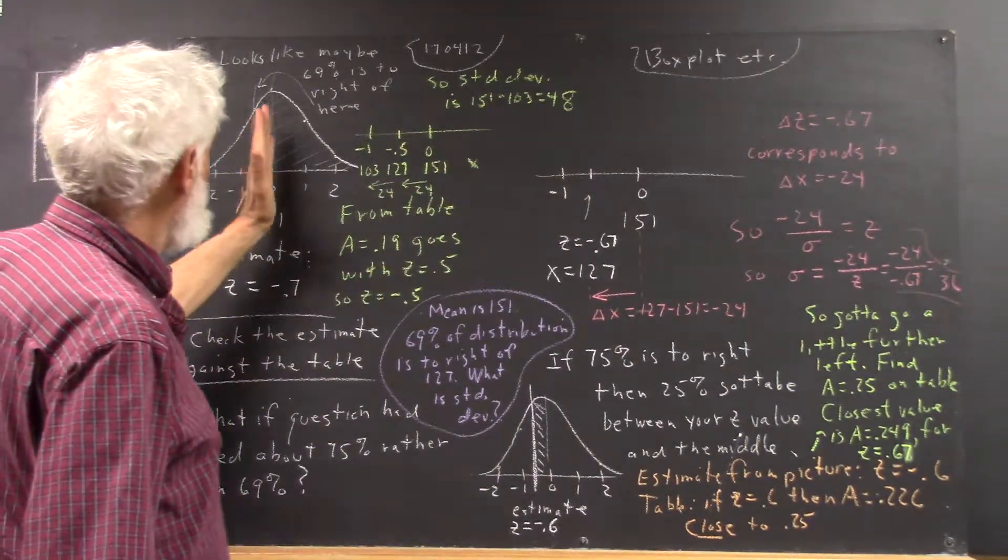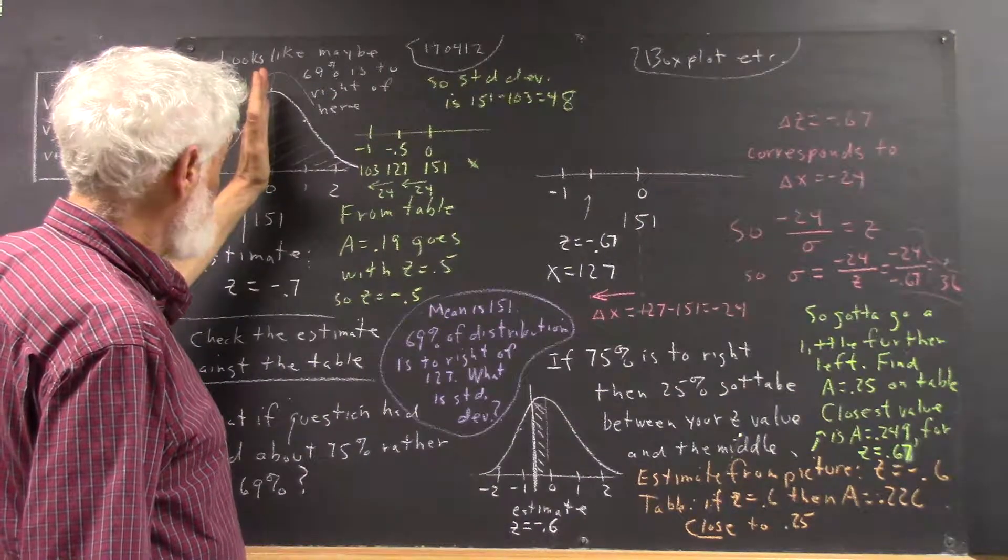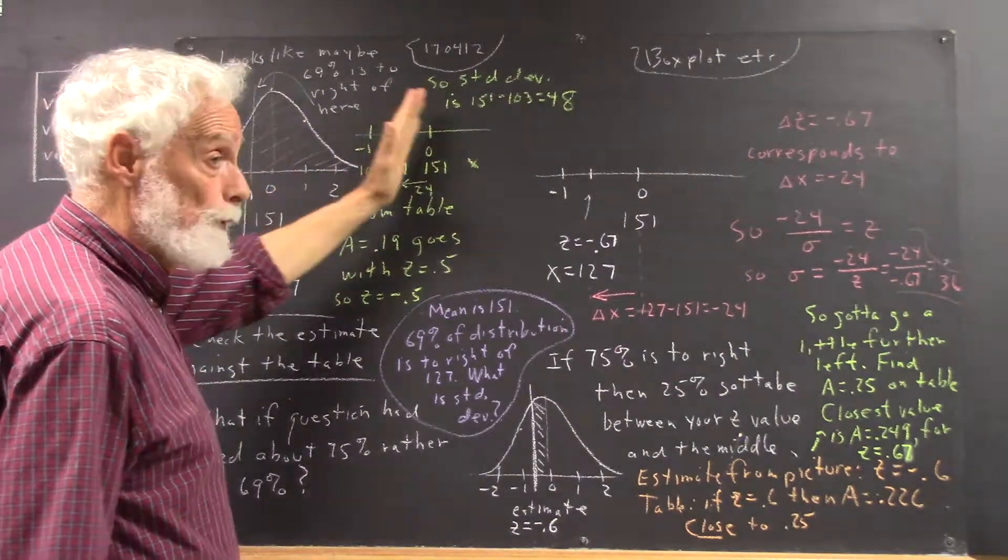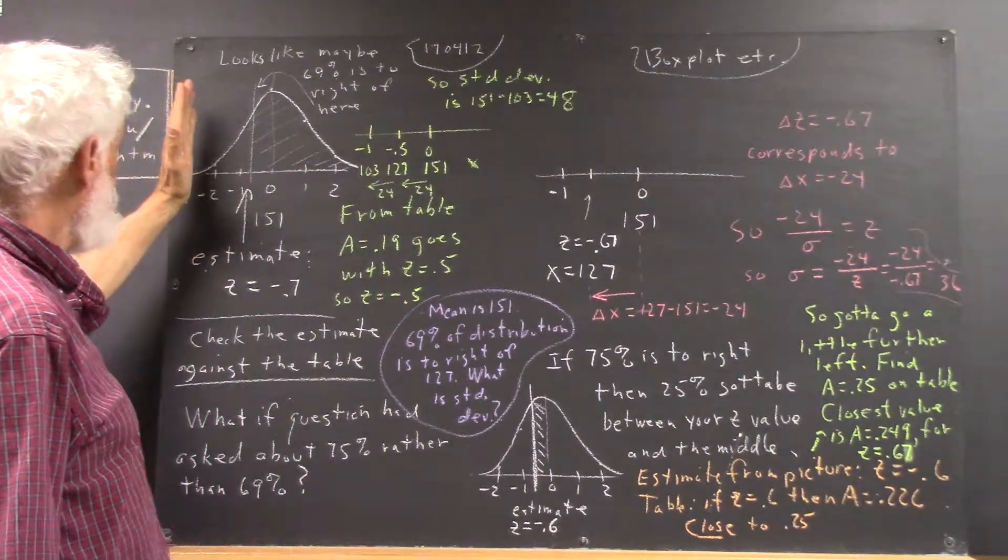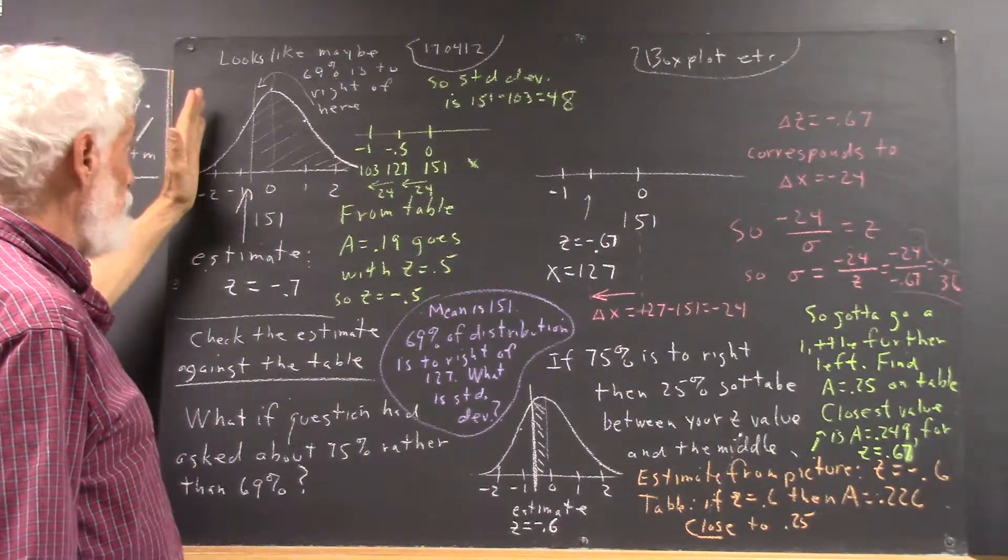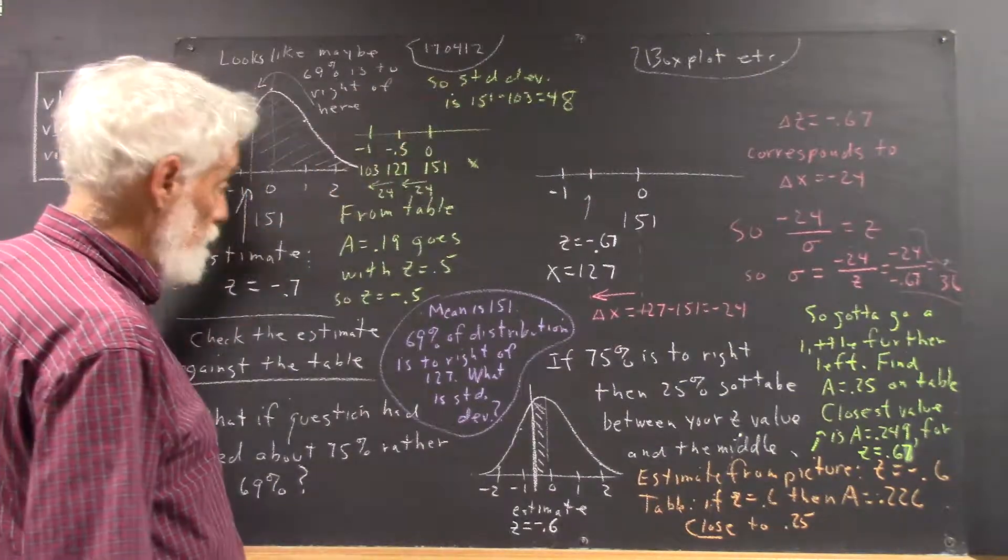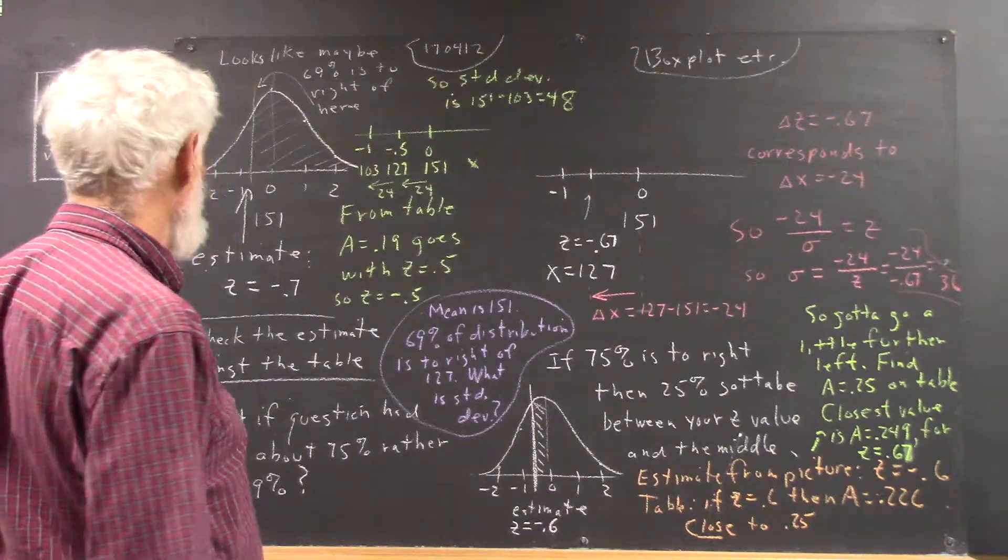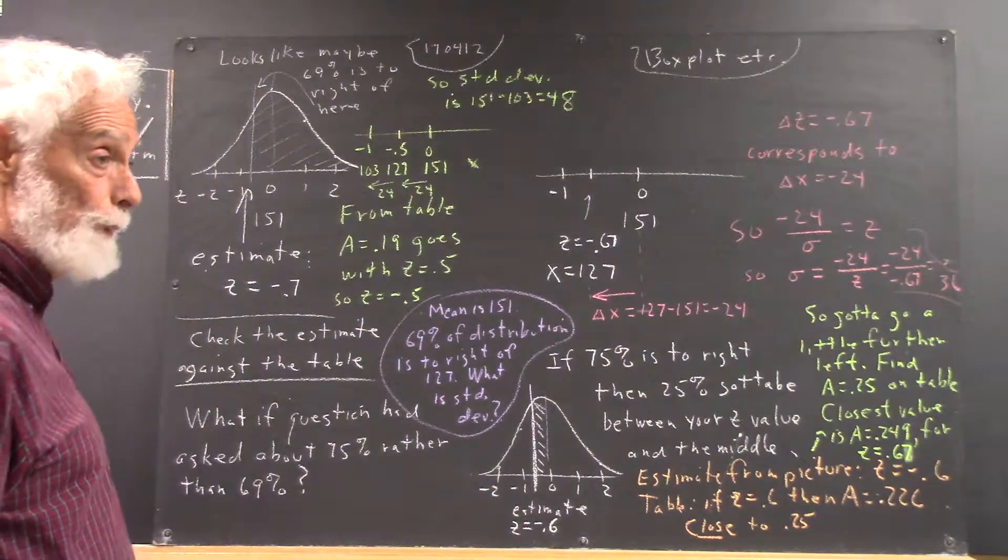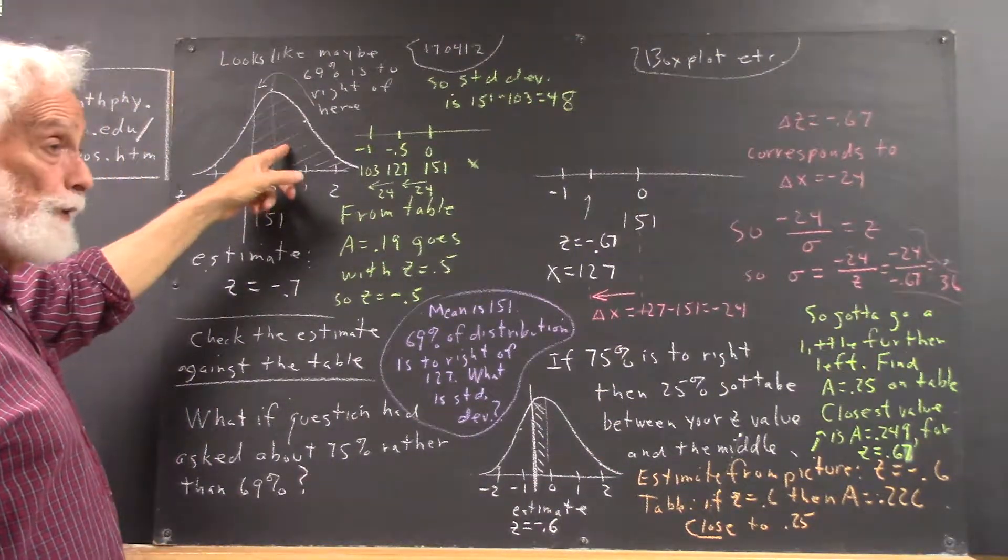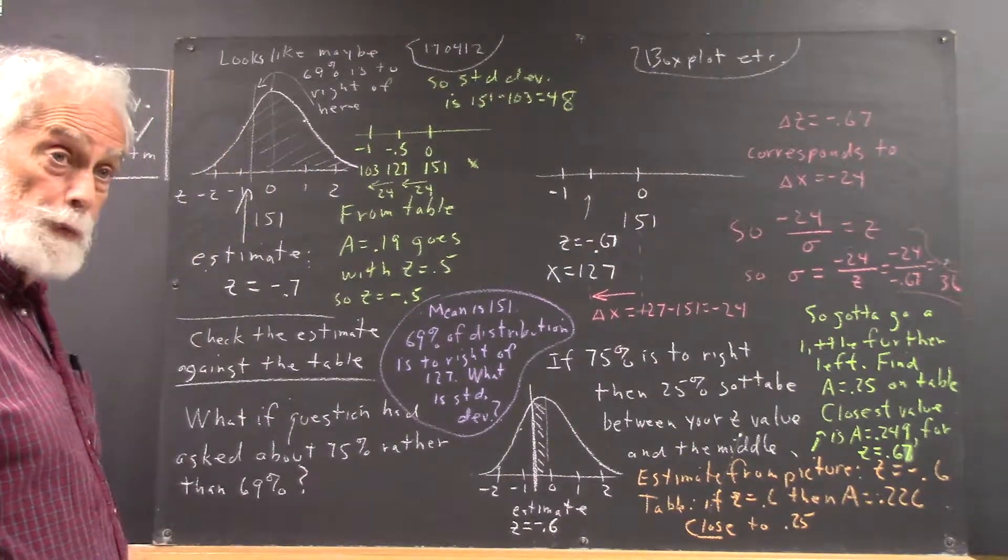Now clearly, it's not going to be the middle, is it? Because only 50% of the distribution is to the right of the middle. And it's not going to be too far over here because way over here we have almost 100% of the distribution lying to the right. So we split the distribution at some point where it looks like this is maybe 69% and this is 31%.